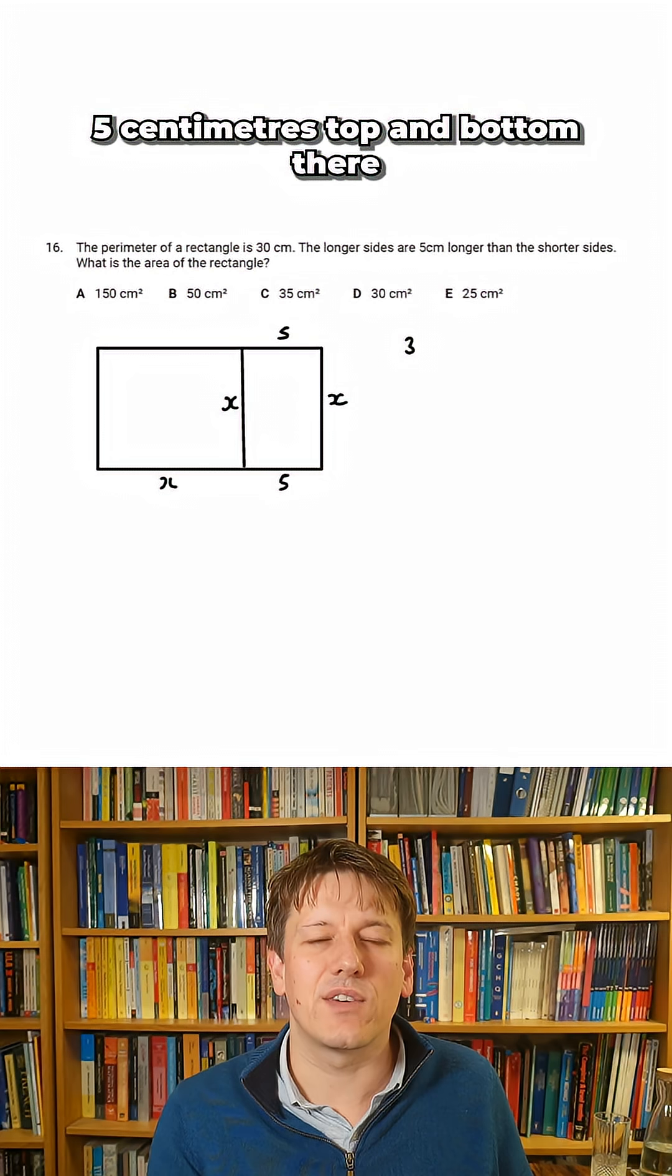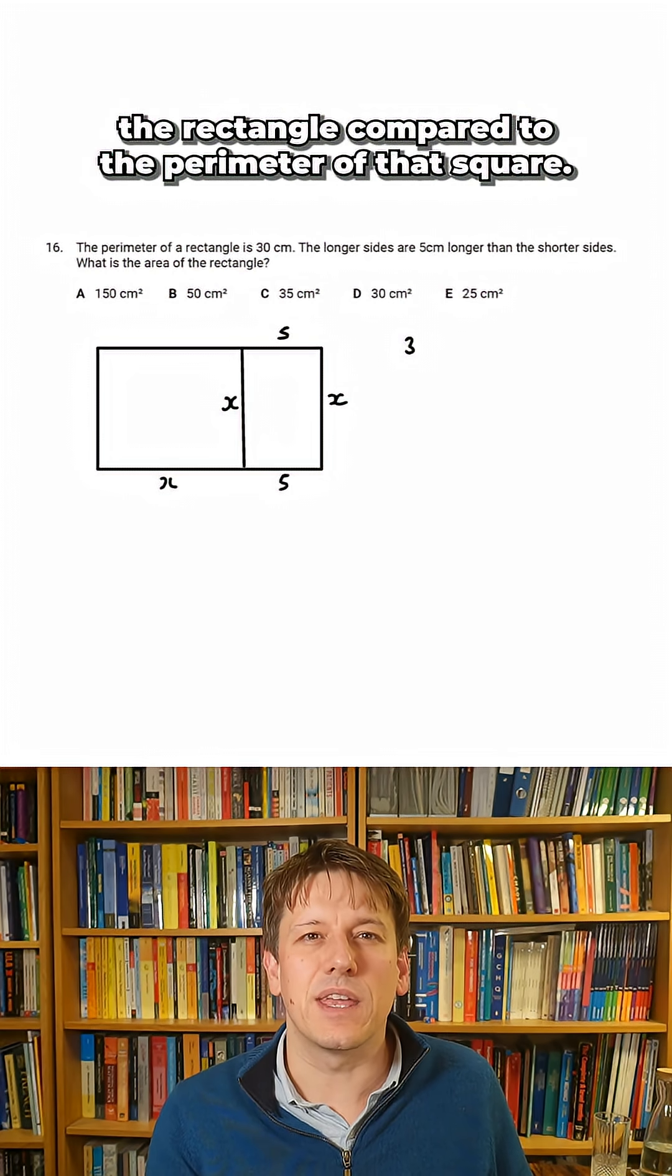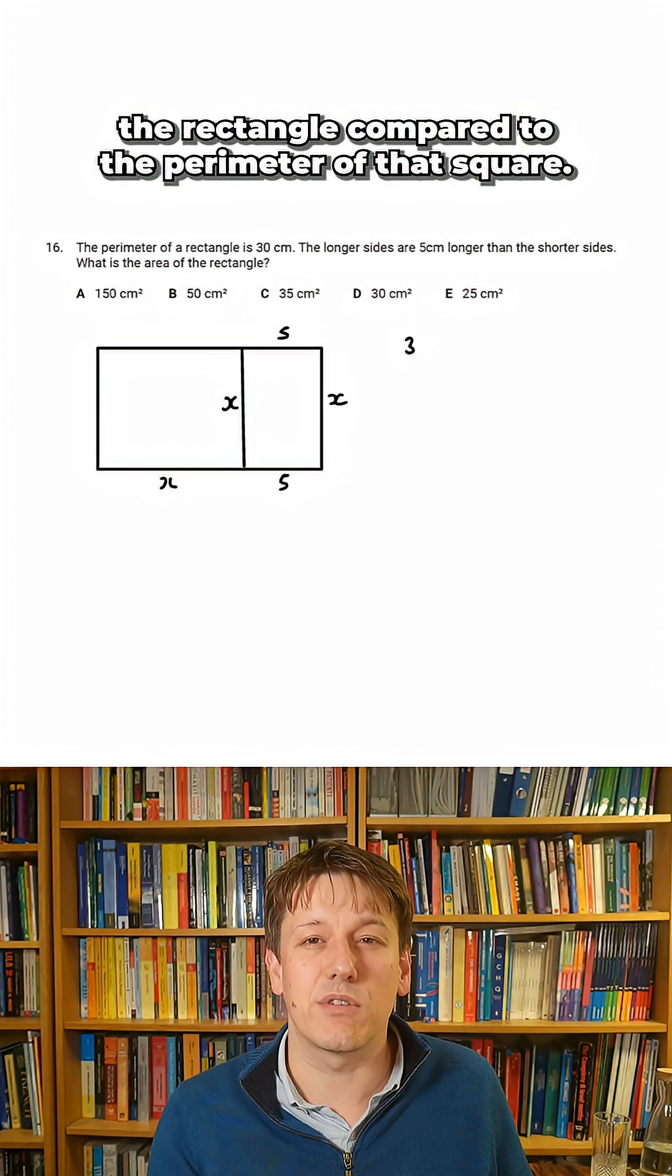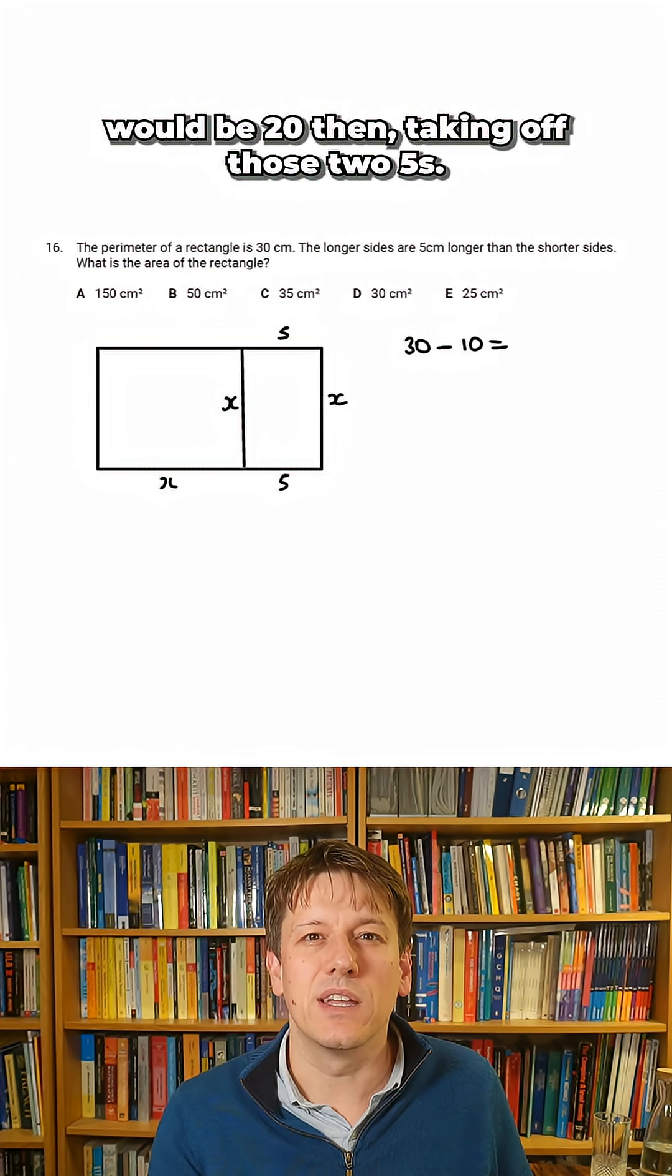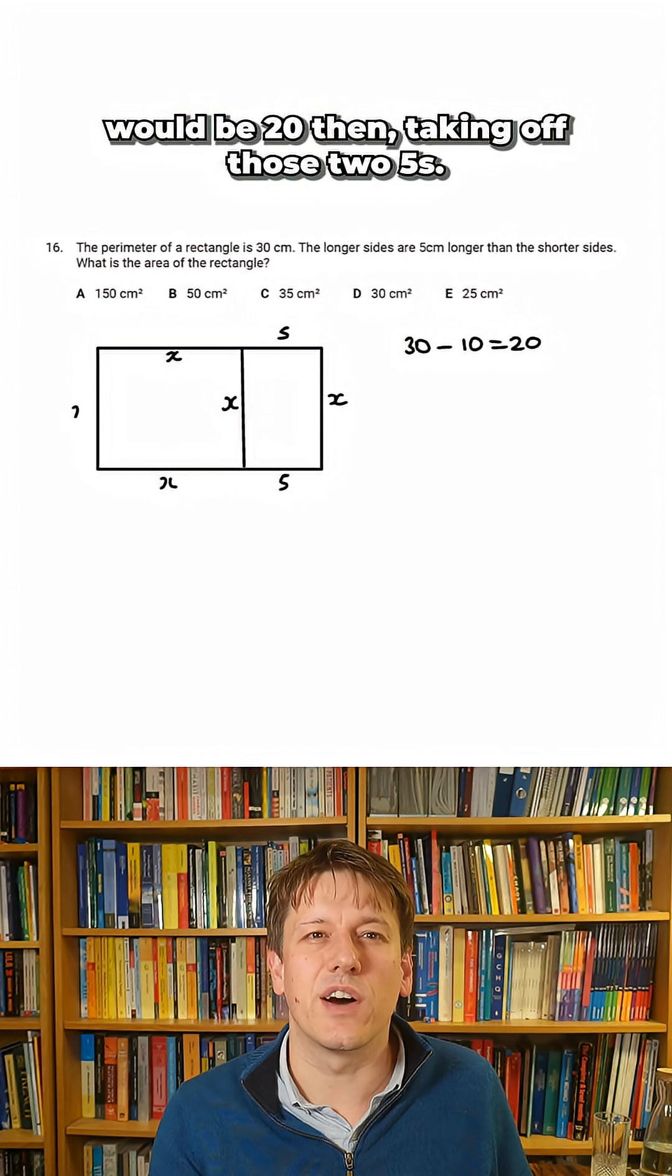We've got an extra five centimeters top and bottom there that make up the rectangle compared to the perimeter of that square. So if the perimeter of the rectangle is 30, the perimeter of the square would be 20 then, taking off those two fives,